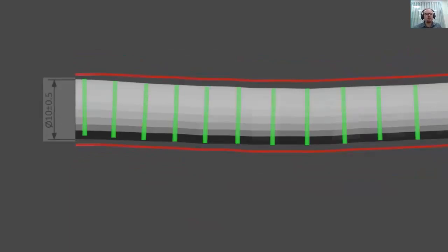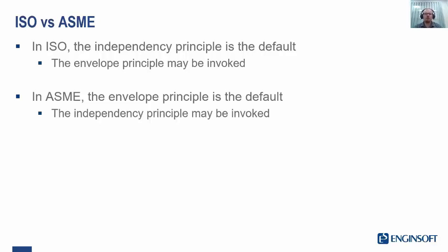The key difference. In ISO the independency principle is the default and the envelope principle may be invoked by using an E symbol. In ASME the envelope principle is the default and the independency principle may be invoked with an I symbol.